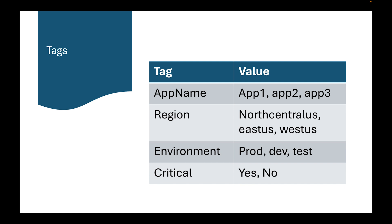Let's get into tags. I'm not going to PowerPoint you to death — we're going to get in front of the Azure portal. Here are some example tags: we have 'app name' with values app1, app2, app3; 'region' with values North Central US, East US, or West US; 'environment' with values prod, dev, test; and a compliance tag with yes or no values.